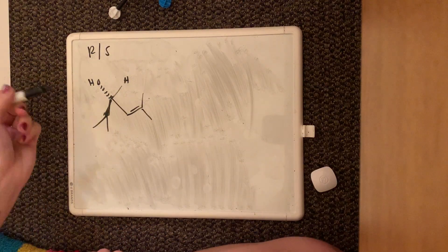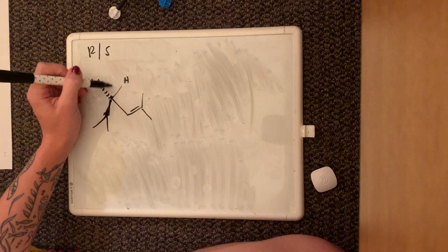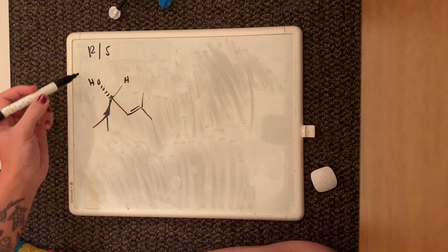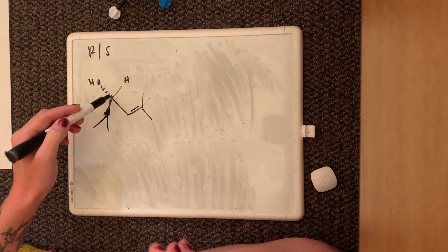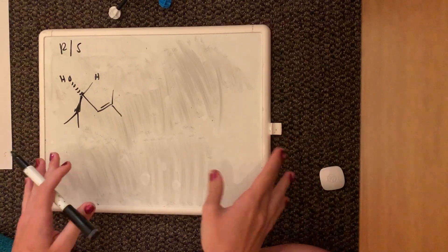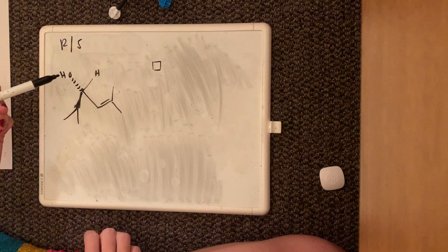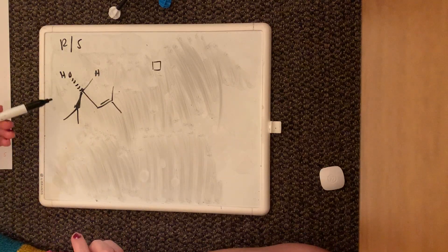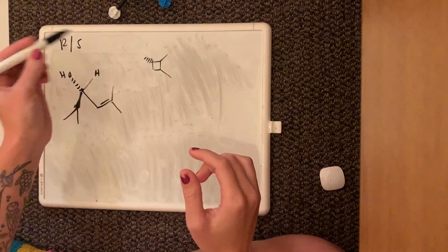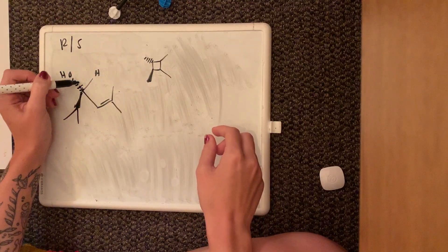First we identify our stereocenter — we can double check: we've got an OH group, an H, a carbon chain, and a carbon that's double bonded, so those are our four substituents and this is our stereocenter. Now we're going to draw a 'baby box' because it's easier to visualize. You literally just draw a small box, then draw the first atom off each substituent with the dashes and wedges exactly the same way as in the original structure — dashes on this side and a wedge here.